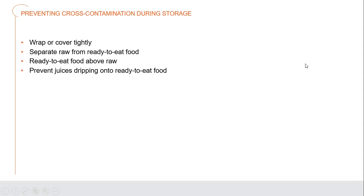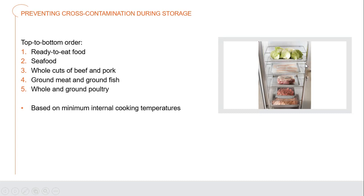Prevent cross-contamination during storage by covering and wrapping foods tightly — in containers or cling wrap — and separating raw and ready-to-eat foods. Ready-to-eat food should always be stored above anything raw, so that no raw juices can ever drip onto ready-to-eat foods, which will not be cooked or processed in any way to kill bacteria before the person eats them.